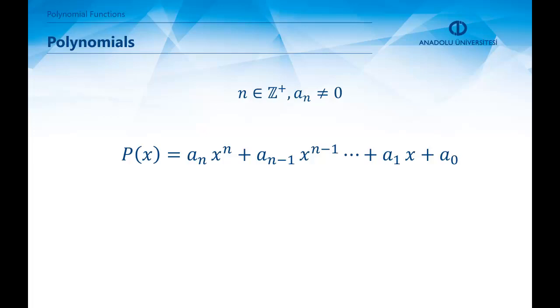Polynomials are functions of the following form: a_n times x to the n plus a_(n-1) times x to the (n-1) and so on and so forth. a_1 x plus a_0 is called a polynomial function. For this to be a polynomial function, the degrees of the variables x must be natural numbers.